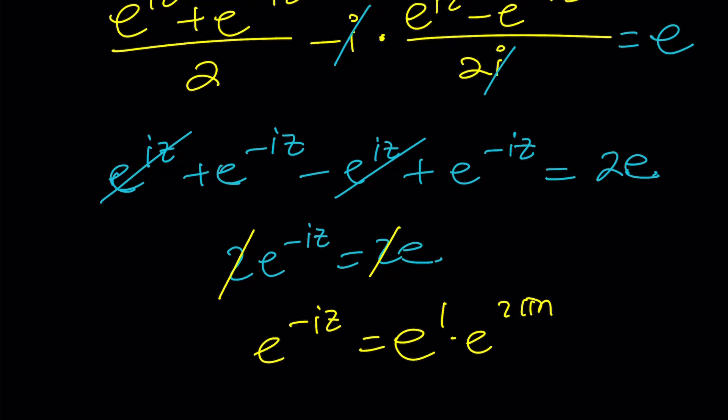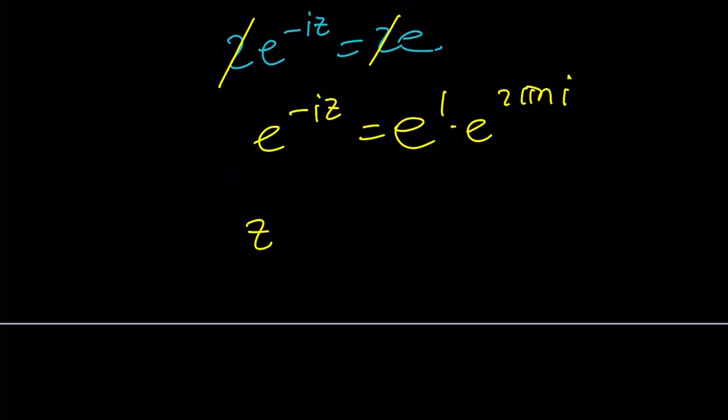You end up with e to the negative i z equals e to the power one times e to the power two pi n i. And that brings us to the solution, we can write it as i plus two pi k, not two pi k i just two pi k.